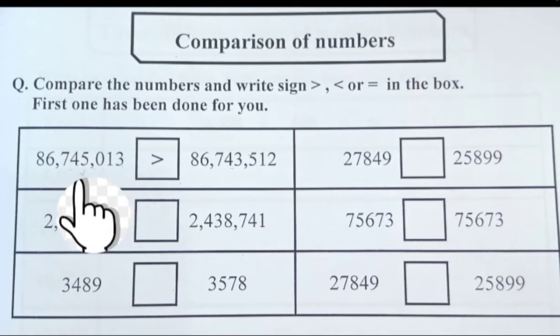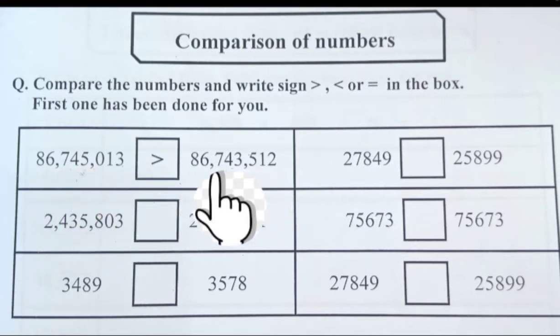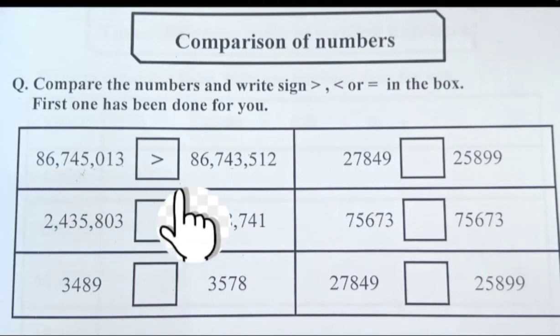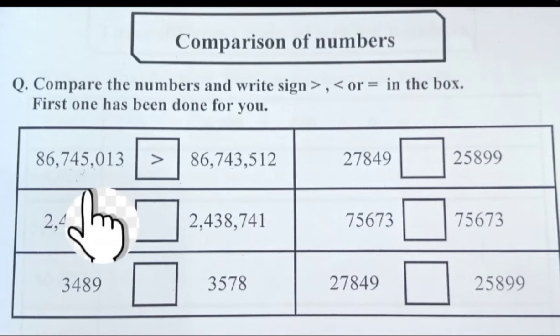You can put commas in the international way so it will become easy for you to compare the numbers. You can see that we have 86 million on both sides, so now we compare the thousand period.